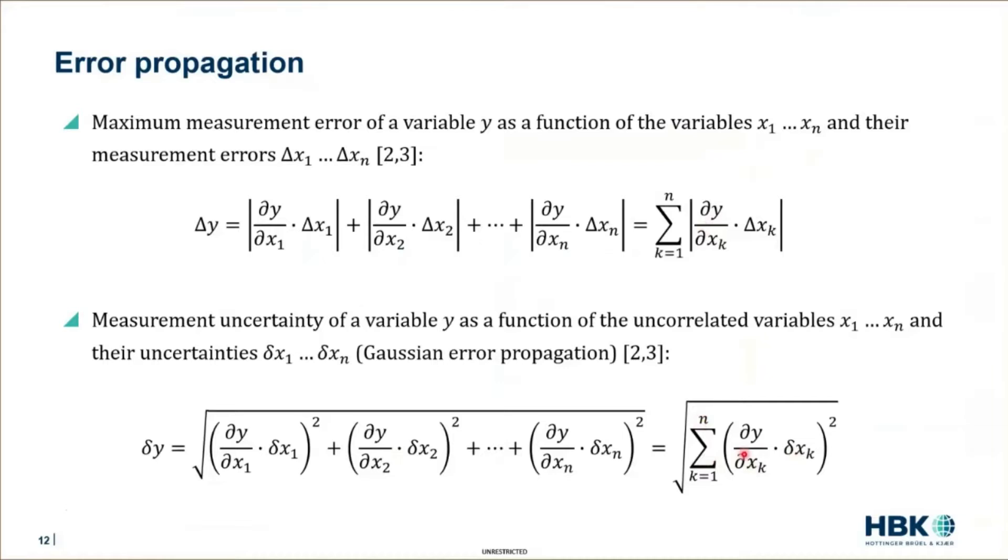That gets clear if you think about the fact that systematic errors are always fixed, but the random errors can be one for one measurement. One value is a bit too high, for the next one the value is a bit too low. And this is also for the different quantities. One quantity may be a bit too high, the other one a bit lower. And then at the end, errors can cancel out. For this reason, we do it with Gaussian error propagation.